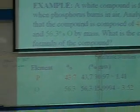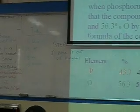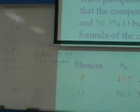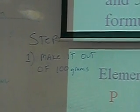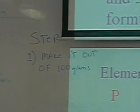Step one of this is you convert it to 100 grams. So you change the percentage to 100 grams. And once you do that, your numbers are 43.7% become 43.7 grams, and the oxygen becomes 56.3 grams.